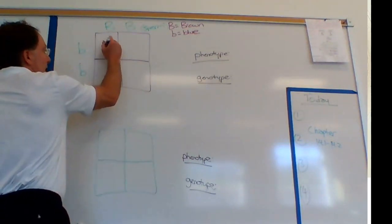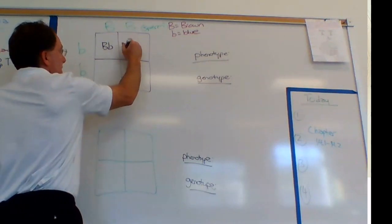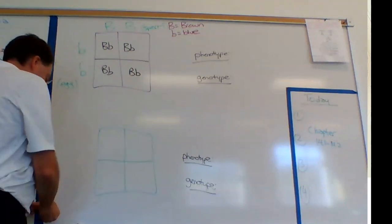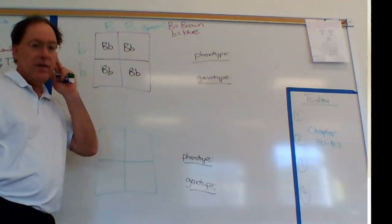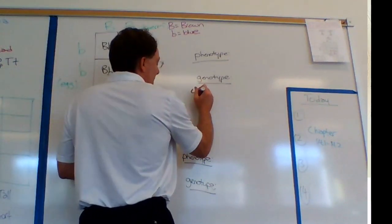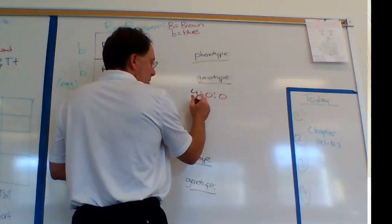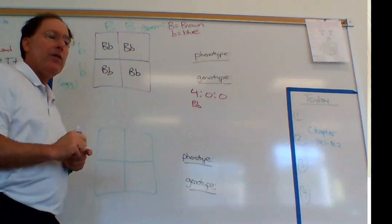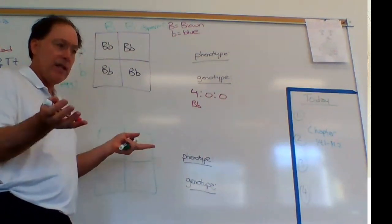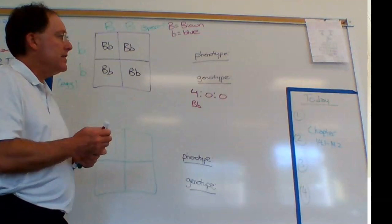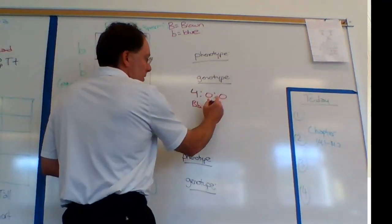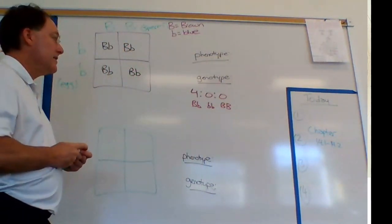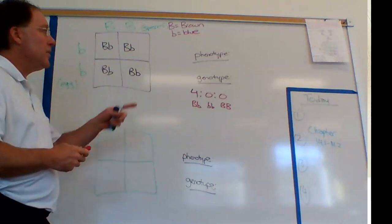Let's do the Punnett square — pull the genes down and across. The question is: what are the genotypes of these offspring? It seems like you have a 4:0:0 genotypic ratio — all big B, little b. This is heterozygous; hetero means different, homo means the same. There are zero homozygous recessive and zero homozygous dominant offspring.